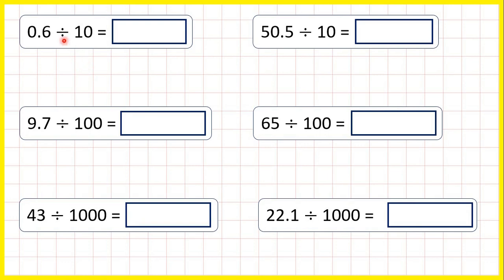Here we're dividing decimals by 10, 100, or 1000. What we do is write the decimal out — so here we have 0.6 — and then copy down the decimal point so that it's directly below the decimal point in our number. Now we're dividing, so the number's getting smaller, which means digits are moving to the right. In 10 we have one zero, so that means digits move one square to the right.